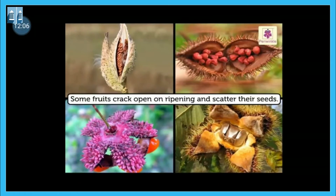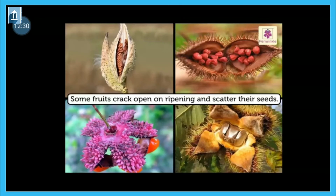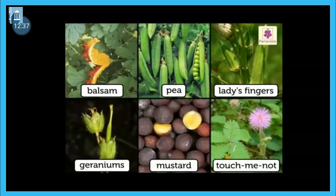The last method is dispersal by explosion of fruits. What happens is that whenever a fruit becomes fully ripe and no one picks it, it will explode — the fruit cracks open and the seeds fall down, go into the soil, and a new plant grows. Some fruits crack by ripening and the seeds scatter in the soil. Examples of such plants are balsam, pea, lady's finger, geraniums, mustard and touch-me-not plant. So these are the ways of dispersal of seeds: by wind, water, animals, and explosion.